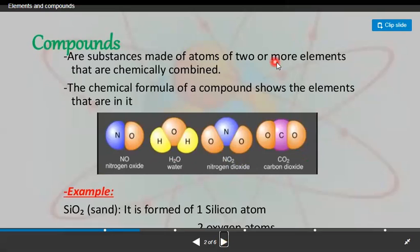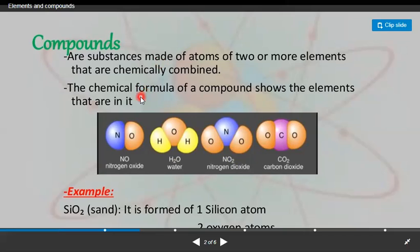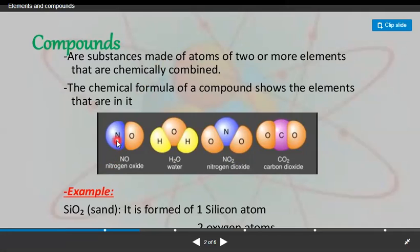Compounds are substances made up of two or more elements that are chemically combined. A compound is a pure substance consisting of two or more different types of elements chemically combined together. For example, this is a separate element of nitrogen and this is a separate element of oxygen. When these are chemically combined together, they form nitrogen oxide — nitrogen oxide is now called a compound.